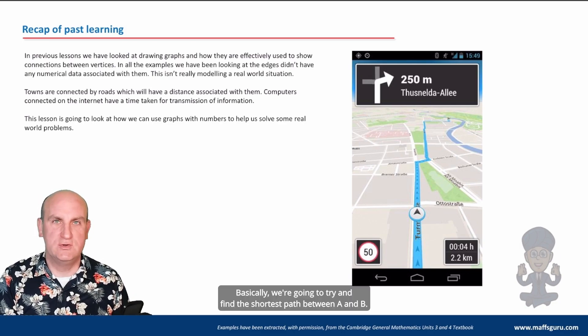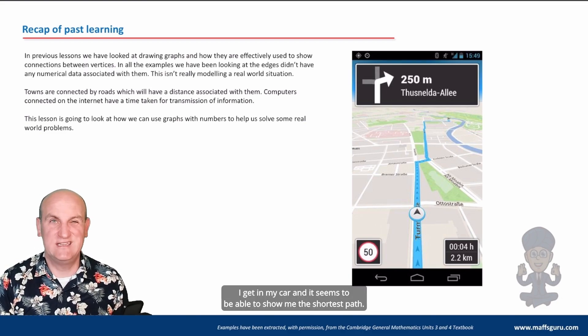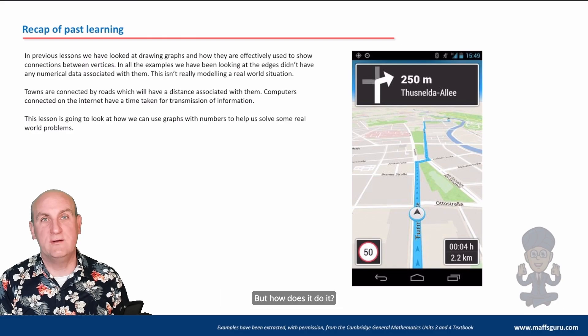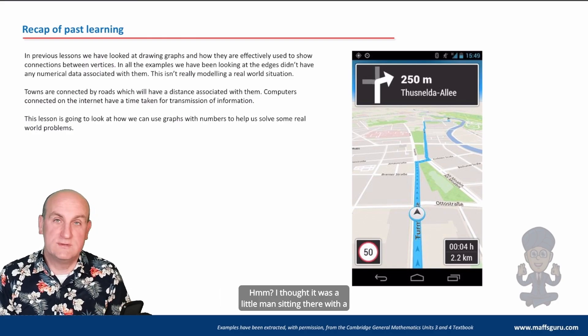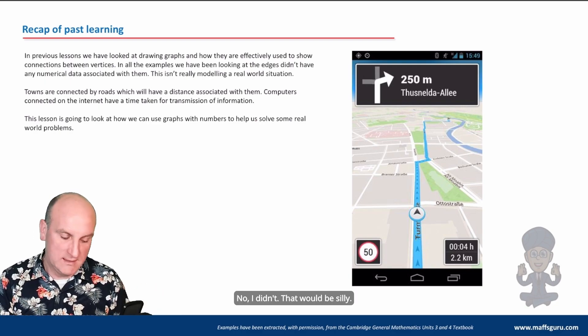Now basically we're going to try and find the shortest path between A and B. Yeah, my GPS seems to do it. I get in my car and it seems to be able to show me the shortest path, but how does it do it? I thought it was a little man sitting there with a piece of pen and paper and just a very large map. No I didn't, that would be silly.